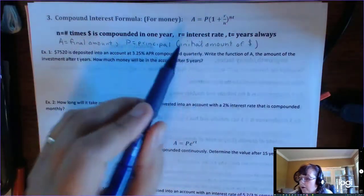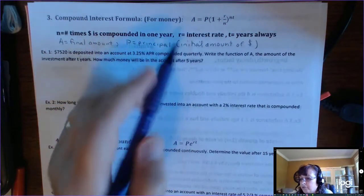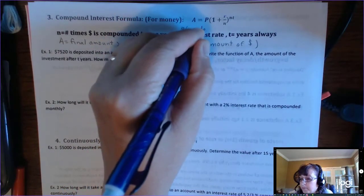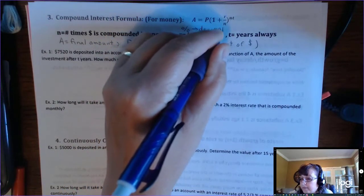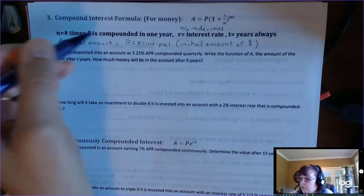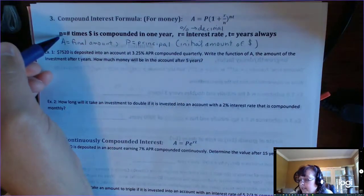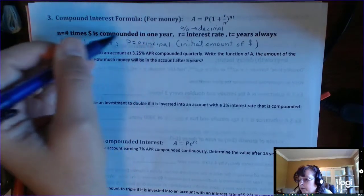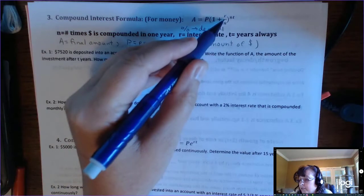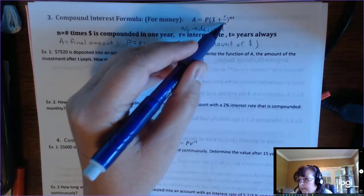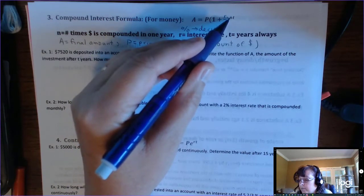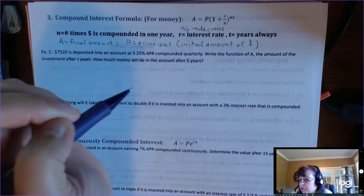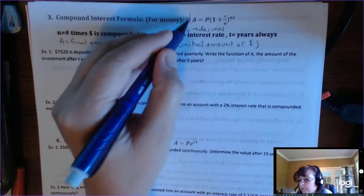And then R is, just like before, the interest rate, so you're going to convert the percent to a decimal by moving the decimal two places to the left. The new variable n is the number of times the money is compounded in one year, so you're going to be told that in the problem. You can see that you're dividing the interest rate by n and you're multiplying the time by n. So there's two n's in the formula. You have to have this formula memorized. This is called the compound interest formula.